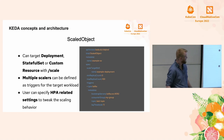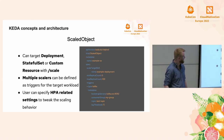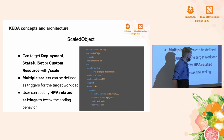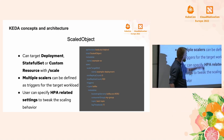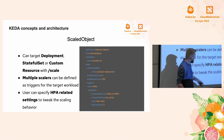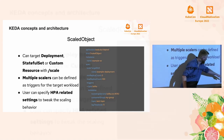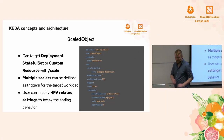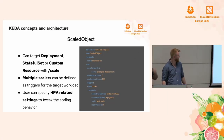This is an example ScaledObject. It's pretty simple: you specify what workload you want to scale as the scale target, then define minimum and maximum replicas, and then there's a triggers section where you can specify multiple triggers. In this case it's just Kafka — you specify the Kafka broker, the consumer group, the topic, and the lag. Based on the lag it will automatically scale the application.